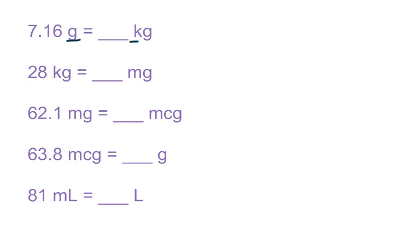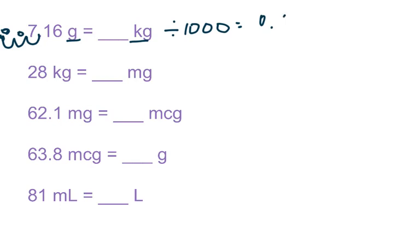This will be our last page of problems. First, I'm going from a gram to a kilogram. Gram is your base, you're going up to the kilo. When you go up, you divide by a thousand, or move the decimal to the left three times. Fill in the holes with zeros. You get 0.00716. Don't forget the leading zero, and we do not round.